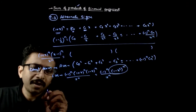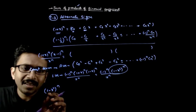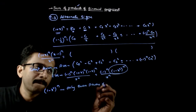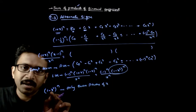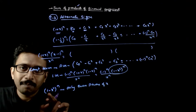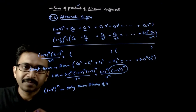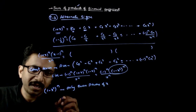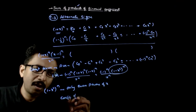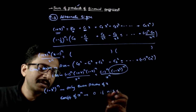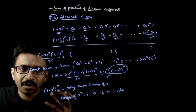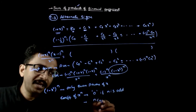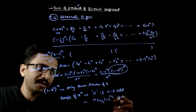What is the coefficient of x^n in (1-x²)^n? In the expansion of (1-x²)^n, you have only even powers of x. Expanding: 1 minus nC1·x² plus nC2·x⁴ minus nC3·x⁶, and so on. So the coefficient of x^n is 0 if n is odd, since all powers are even. If n is even, the term x² raised to n/2 gives x^n, so the coefficient is nC(n/2) times (-1)^(n/2).